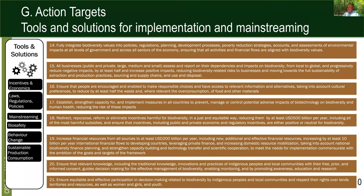Target 15 focuses on economic activities and business and how they're run, how their impact is decreased, how we factor risk into industries like extractive industries and supply chains, and talks about circular economy. Target 16 is about how all of us are making choices every day — what we purchase, how we get somewhere — and ensuring that we have the information and alternatives available.